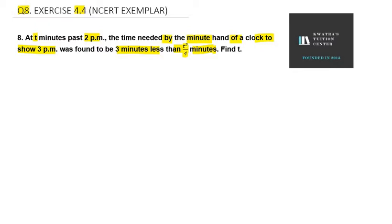From 2pm to 3pm total time taken is 60 minutes. After t minutes past 2pm, the time needed by minute hand of a clock to show 3pm is given as 3 minutes less than t square over 4. So it can be written as t square over 4 minus 3.